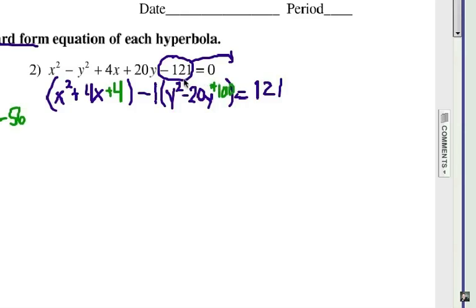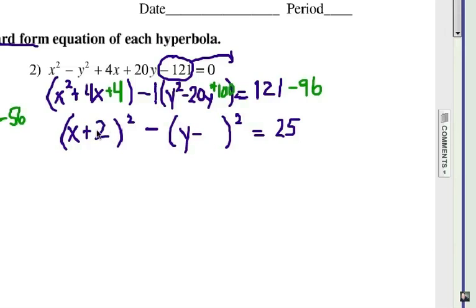Now the net result is that we added a 4 and we added a negative 100. A 4 and a negative 100, so that's negative 96 that we would add to the other side. That would be 25 on the right. And then we factor out our trinomials here. If we did it right, we should have a squared binomial, and it looks like we do. x plus 2 squared and y minus 10 squared.